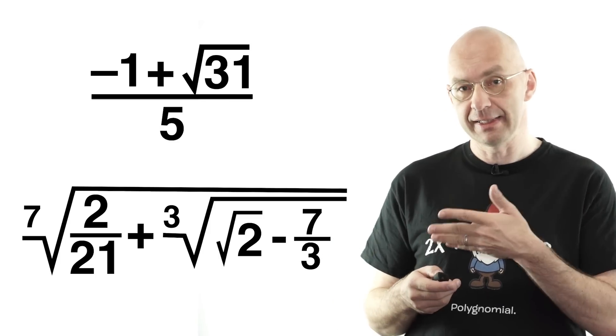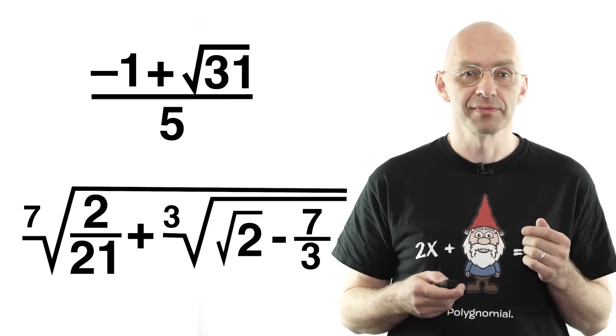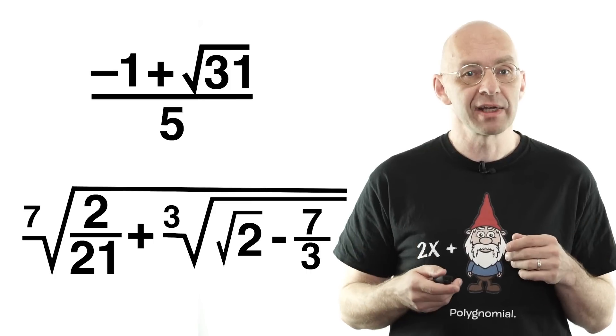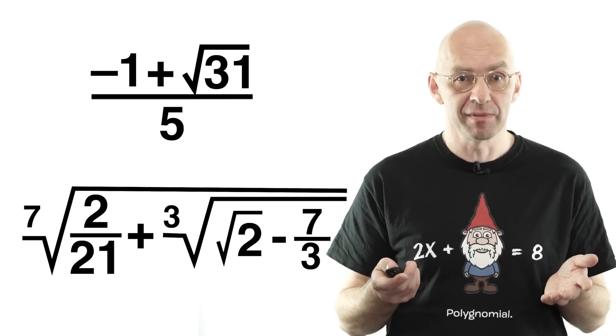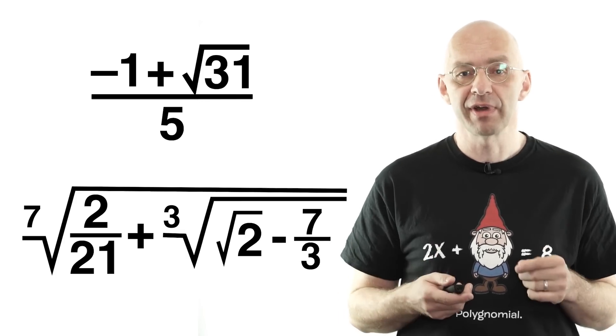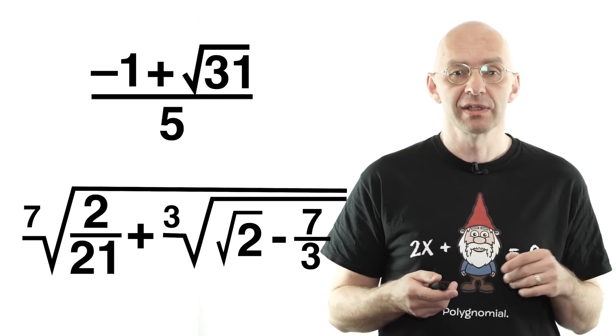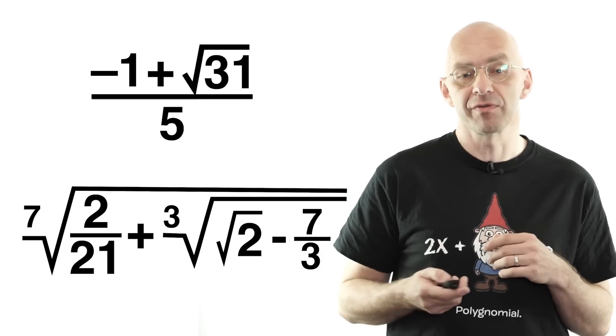Also, all numbers without exception that can be written as radical expressions by combining integers using plus, minus, times, divided, and roots like these are algebraic. On the other hand, there are algebraic numbers that cannot be written as such rooty expressions. That the algebraic numbers have these properties is really quite miraculous and not obvious at all. Definitely worth one or two separate videos I think.